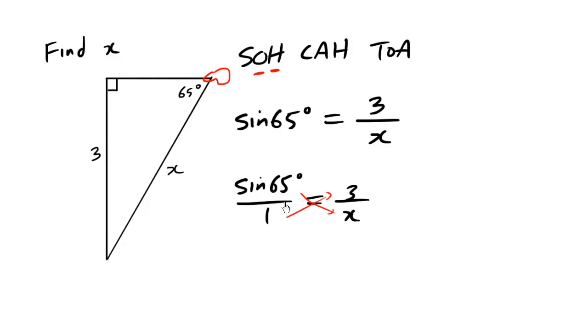Because some number is equals to itself over 1, and then cross multiply. So what we have here is X times sine 65 degrees is equals to 1 times 3. So to get rid of this part here and to solve for X, we're going to divide both sides by sine 65. So X is equals to 1 times 3, which you know is 3, divided by sine 65 degrees. So just punch it into your calculator, make sure that you're in degree mode, and we get the value 3.3 approximately.